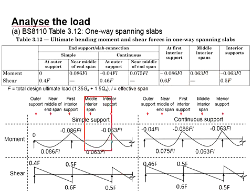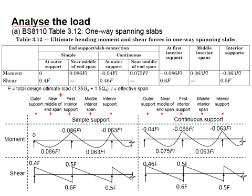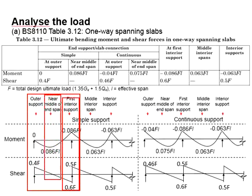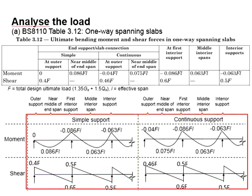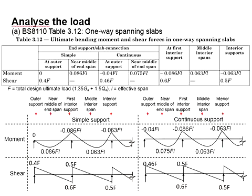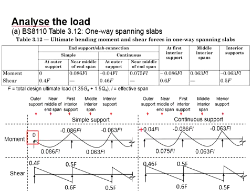The middle and outer supports repeat symmetrically until the other end. For the last span, it mirrors the first — with the first interior support, mid span, and outer support. You can imagine the bending moment and shear force diagram in symmetrical conditions. The main difference between the simply supported end span and continuous end span is the moment at the end span, which should be equal to zero or will have some negative moment.